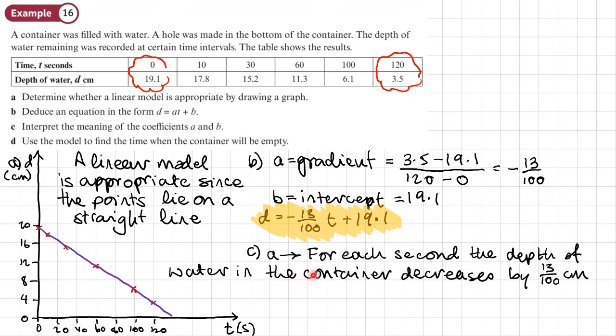OK, so we've got that written there. For each second, the depth of water in the container decreases by basically 0.13 centimetres.